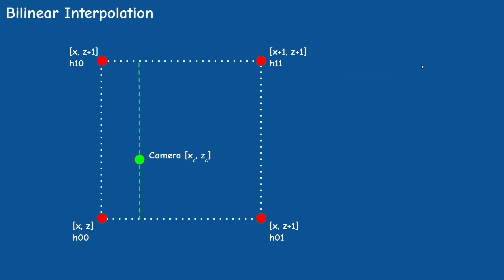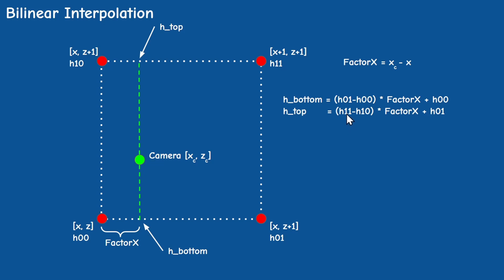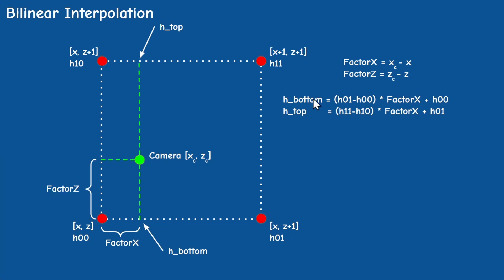What we do next is called bilinear interpolation. First we want to get the heights at the two endpoints of this green line. We calculate factor X which is the fractional part of the X component. Then to get the heights we interpolate along the top and bottom edges separately by multiplying the factor by the delta in heights and adding the result to the height on the left. When the factor is close to 0 the result will be closer to the height on the left, and when the factor is almost 1 the result will be closer to the height on the right. Now that we have the two heights on the edges of the green line we do the same interpolation along the Z. We calculate factor Z in the same way and use the same formula to get the final height at the camera location.